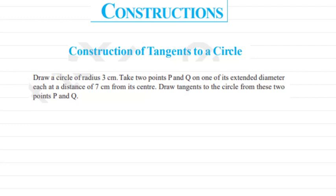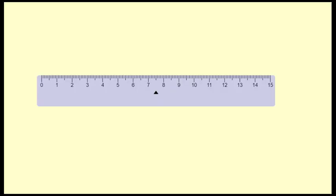Here we have the question: construct a circle of radius 3 centimeters and take two points P and Q on one of its extended diameters, each at a distance of 7 centimeters from its center. Then you have to draw the tangents to the circle from these two points P and Q.